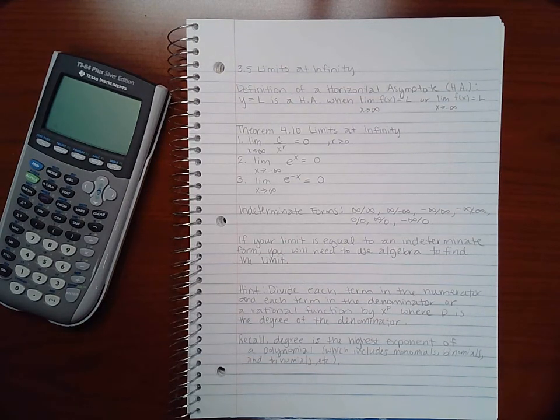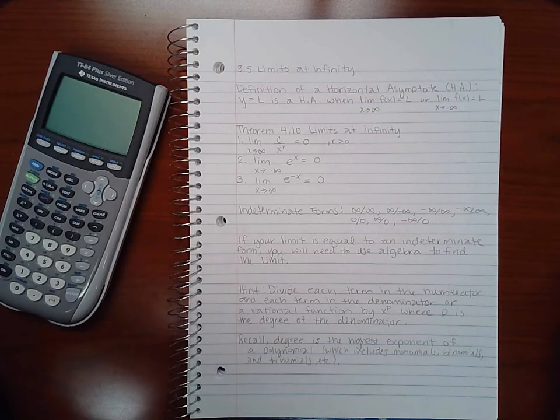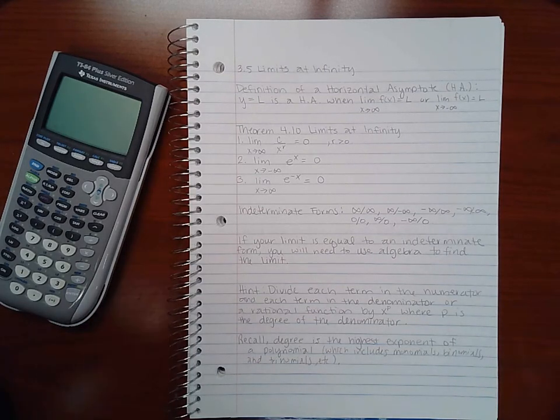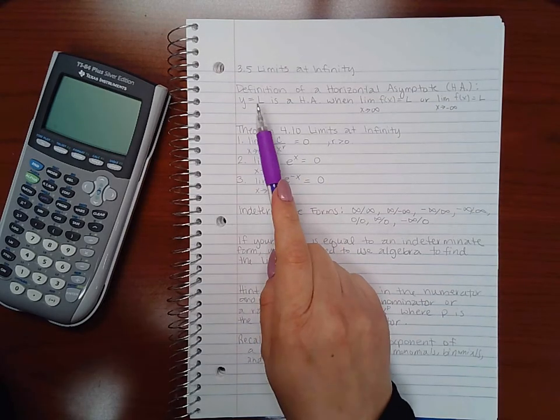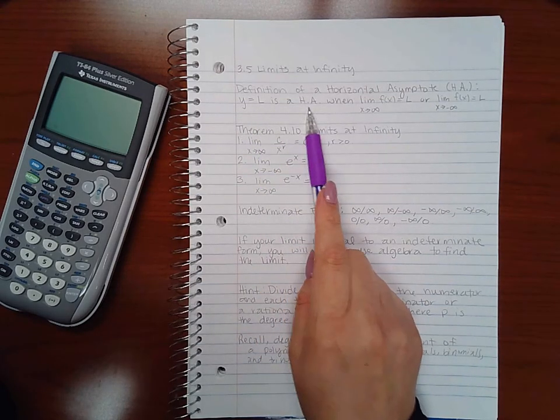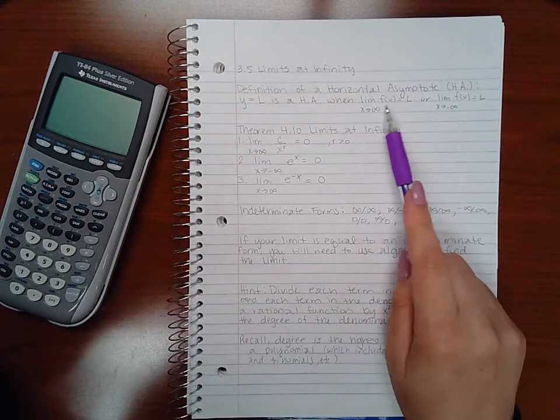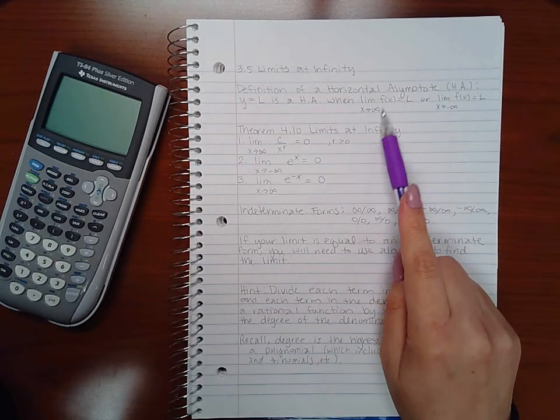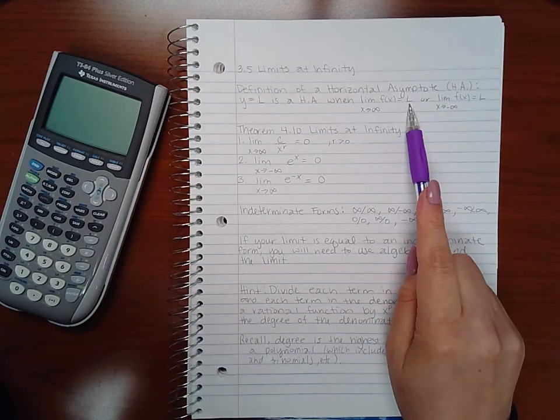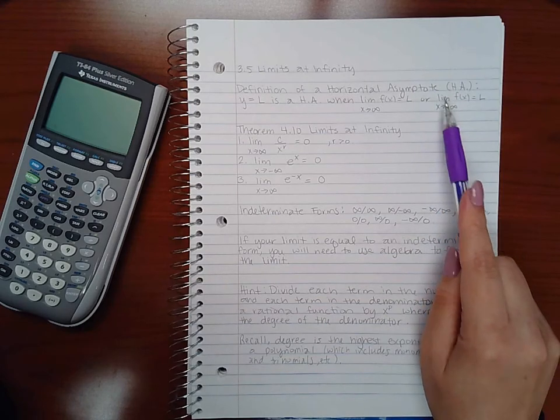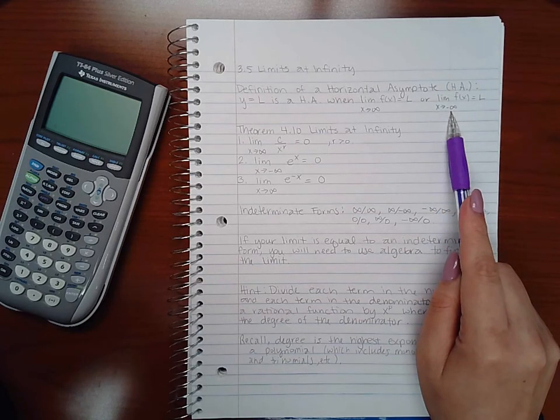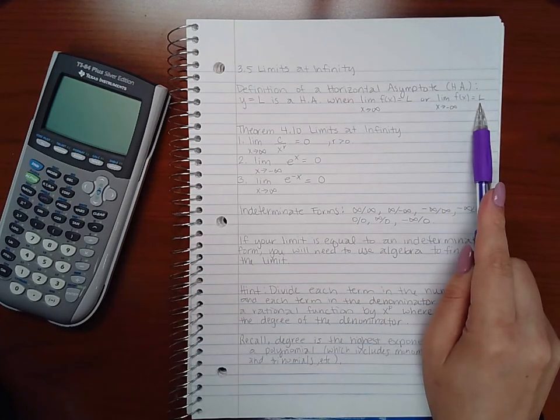This video is section 3.5 limits at infinity. The definition of a horizontal asymptote is y equals l is a horizontal asymptote when the limit as x approaches infinity of the function equals l, or the limit as x approaches negative infinity of the function equals l.